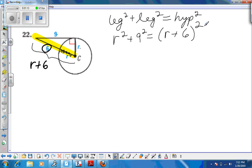Just like what we did in class the other day, we're going to have to FOIL over here on the right side. So the left side is r squared plus 81. 9 times 9 is 81.